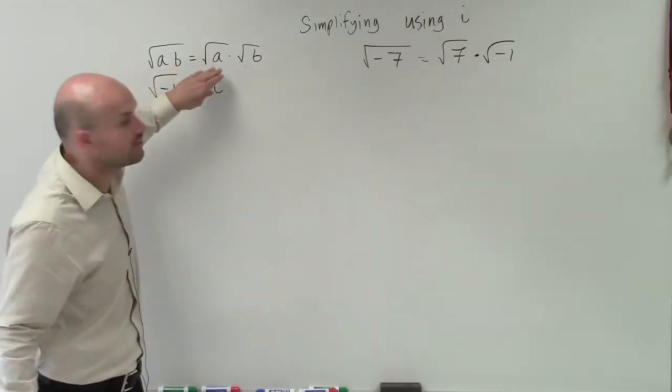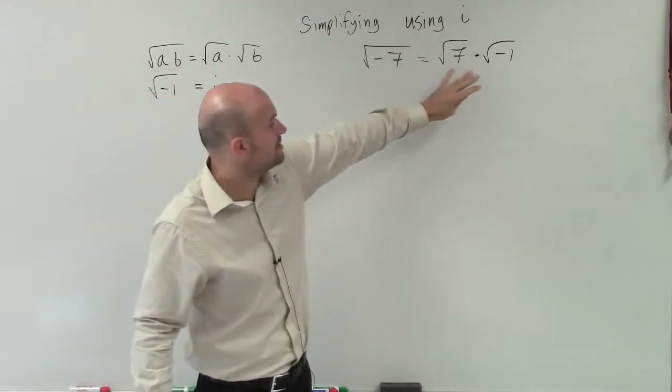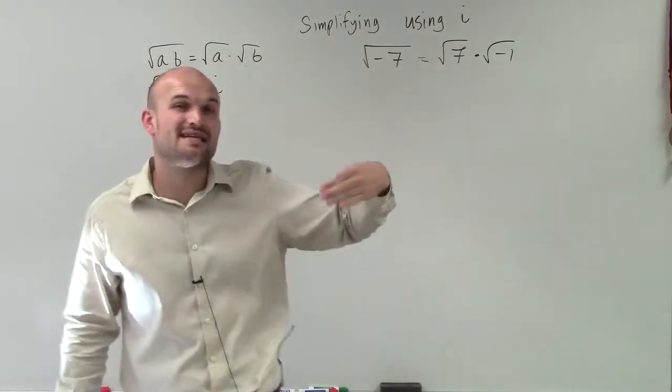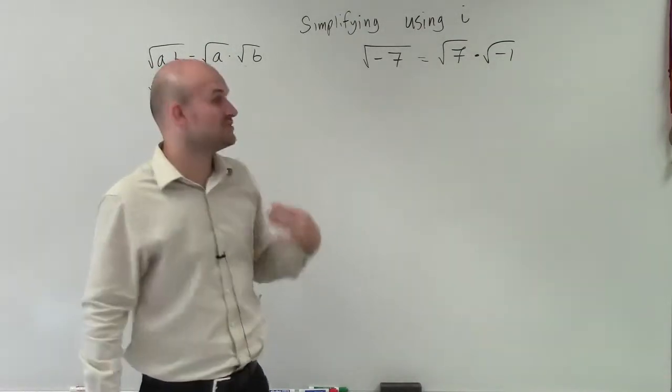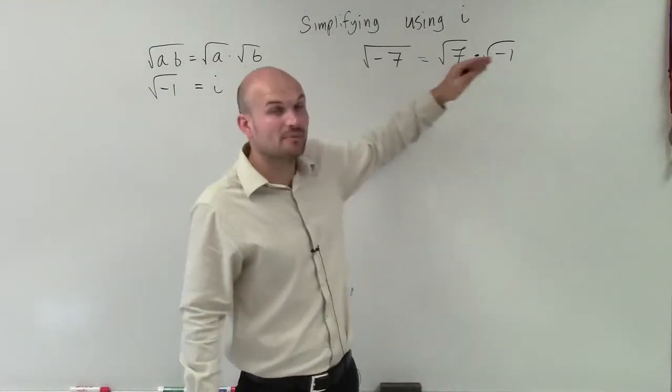By applying this rule with my radical numbers, or applying the property, I understand that I can break that up into square root of 7 times the square root of negative 1. Now I'm going to want to simplify each of these numbers individually.